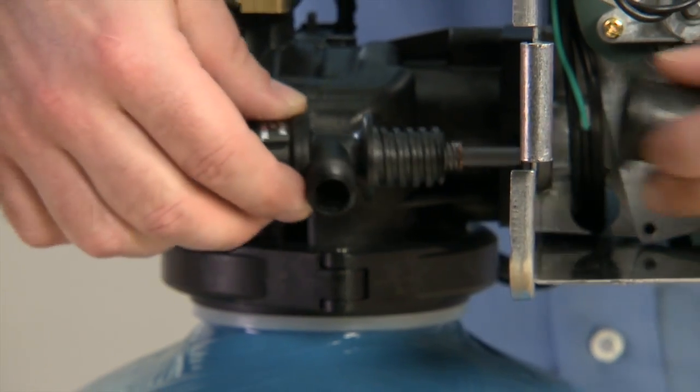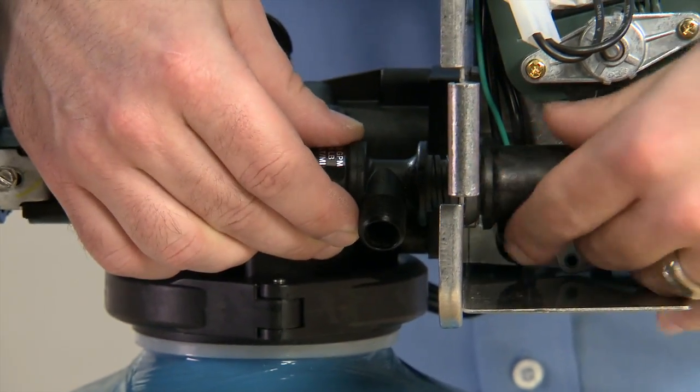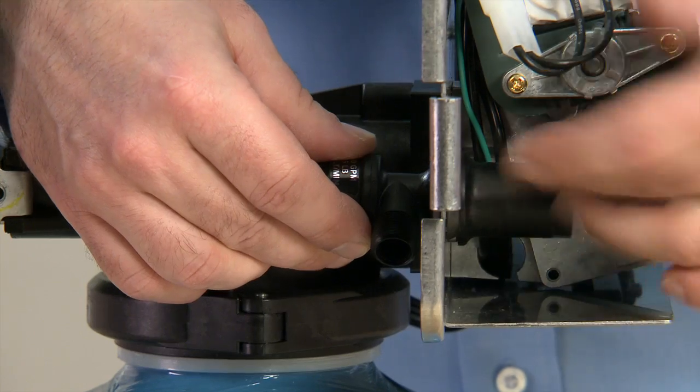In order to reassemble the unit, you reverse the procedure, tightening the brine valve back to the back plate.